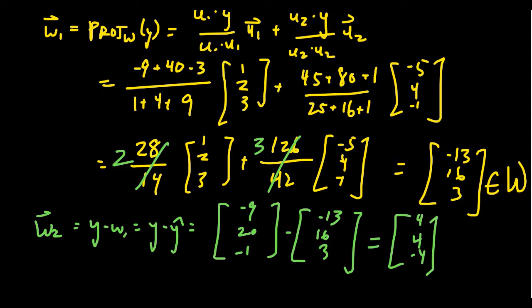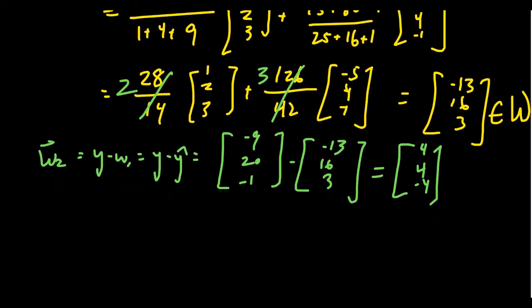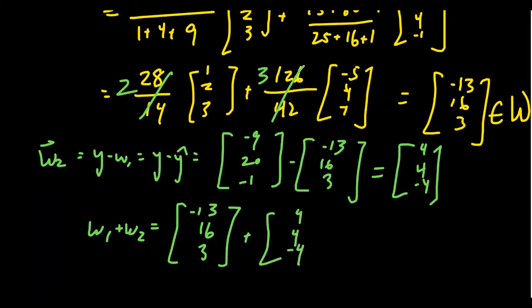And so let's verify to make sure we have everything correct. So if we take w1 plus w2, this part we should expect to go smoothly. We take our w1 right here, which was inside of W, we get [-13, 16, 3], and then we add it to w2, which is right here, [4, 4, -4]. And given that we computed w2 just a second ago by subtraction, the sum should work out pretty obviously. You're going to end up with [-9, 20, -1] again. That's what y originally was. No surprise there.